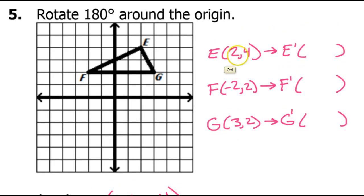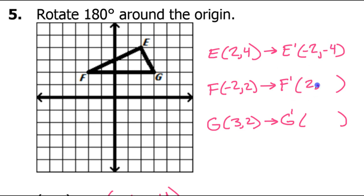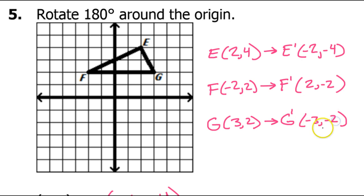Applying the 180-degree rule to the coordinates gives: negative 2 comma negative 4, positive 2 comma negative 2, and negative 3 comma negative 2. We'll just plot those.